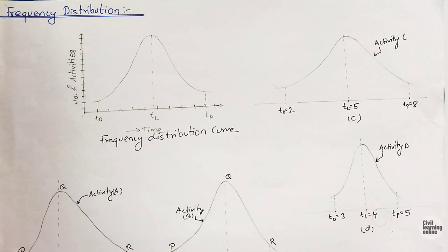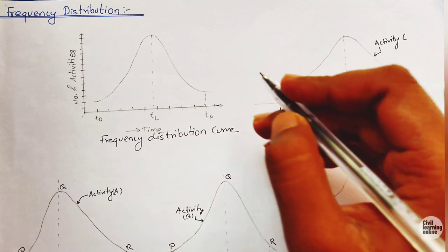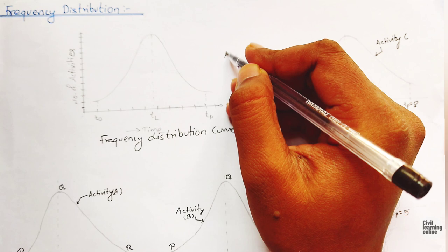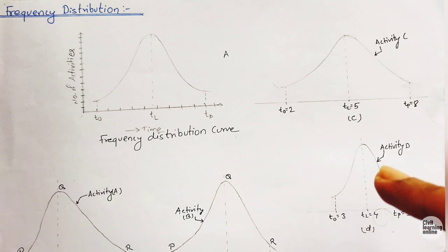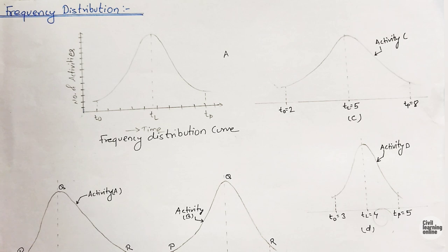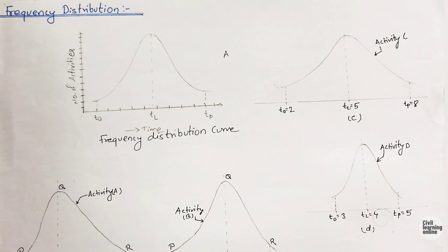Let's begin today's lecture on frequency distribution curve. Suppose we have an activity A which is to be completed under some condition. In the previous lecture we learned about three types of time estimates: optimistic time estimate, pessimistic time estimate, and most likely time estimate. Optimistic time estimate is the shortest time in which an activity can be completed under ideal conditions, and pessimistic time estimate is the maximum time in which an activity can be completed when nothing goes as per plan — some adverse condition exists.